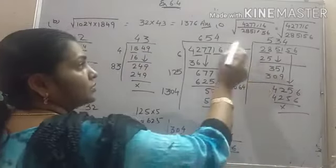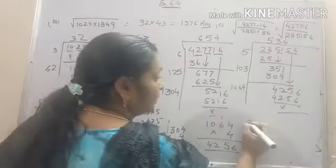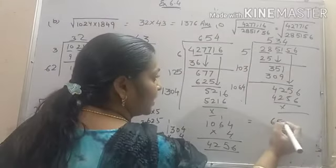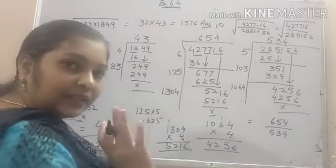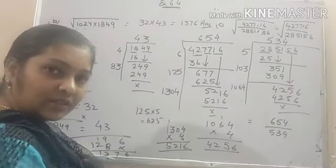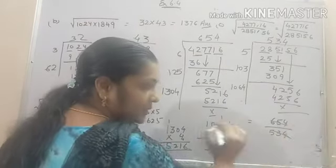So we get the roots of both the numbers. So solving it, it will be equal to 654 upon 534. Now you can see that this fraction is not in the lowest term. And we need to solve it in the lowest term.